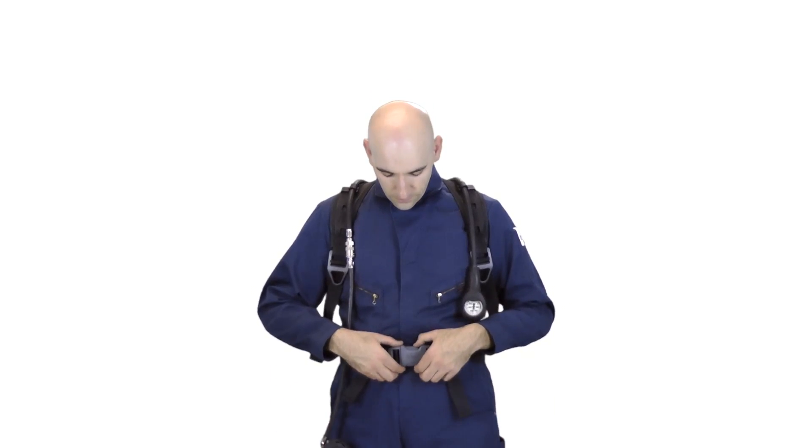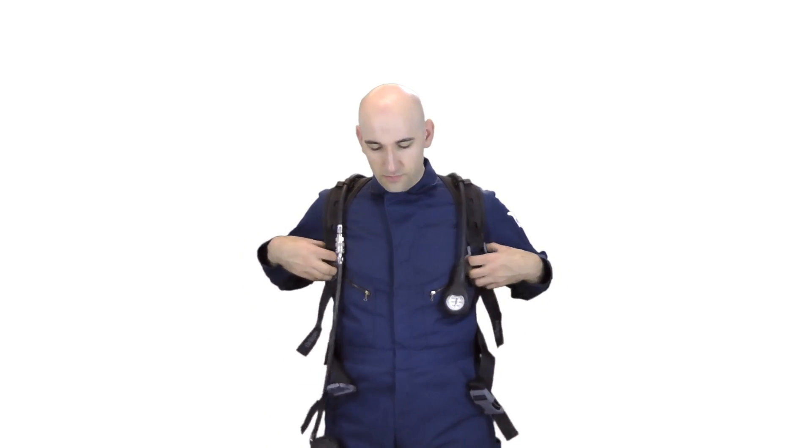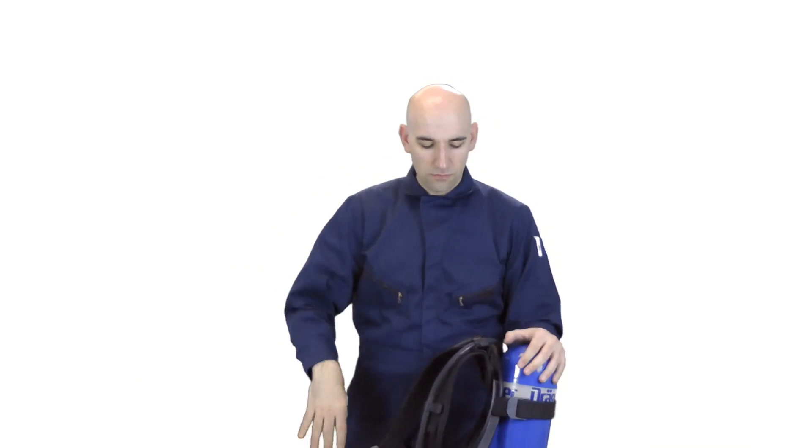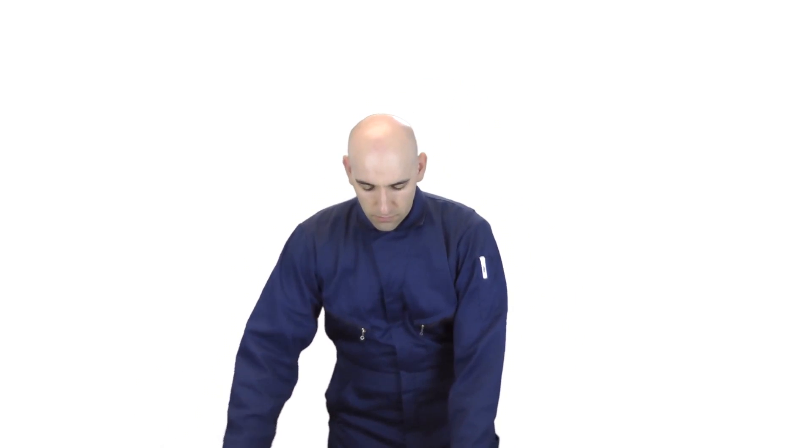To doff the SCBA, unbuckle the waist belt, loosen the shoulder straps by pulling up on the shoulder buckles, and finally remove the SCBA from your shoulders.